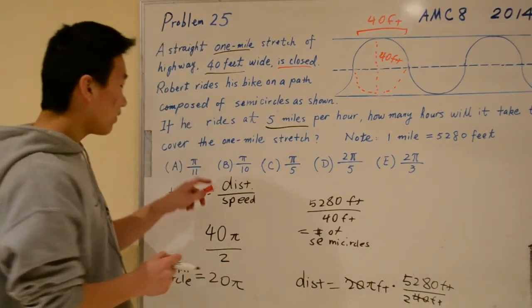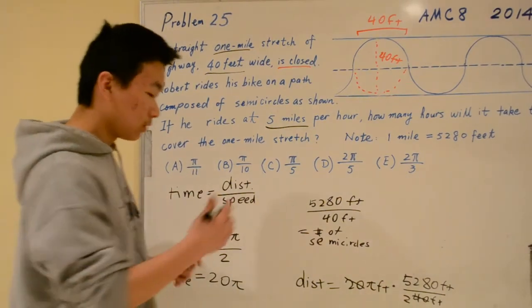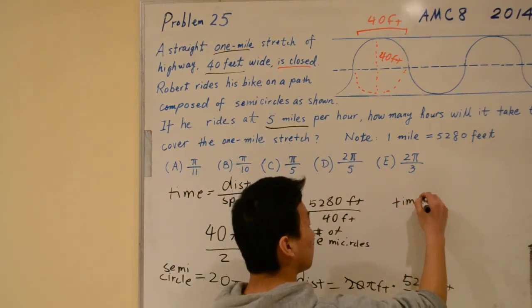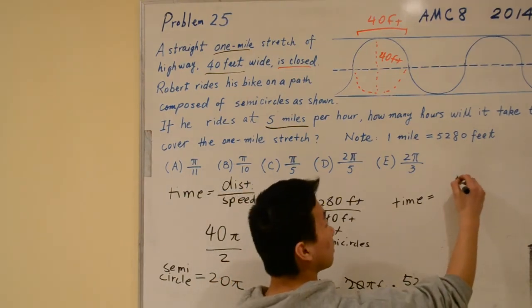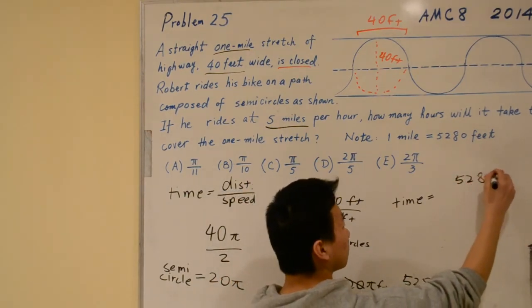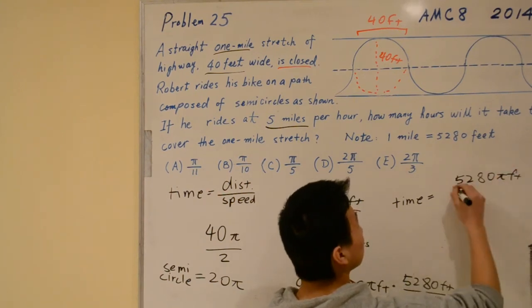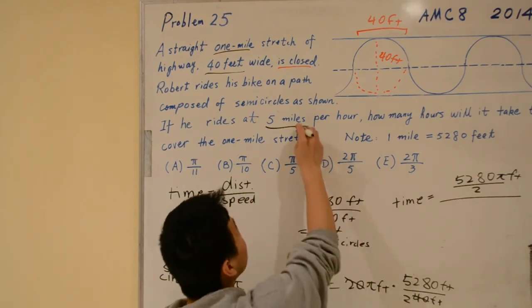Now that we know the distance and also the speed, we can find what the time is. The time equals the distance divided by the speed.